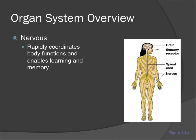The nervous system rapidly coordinates body functions and enables learning and memory. It's often referred to as the granddaddy of all the systems because it includes your brain, spinal cord, and nerves, sending signals throughout the body. If something in the nervous system gets damaged, it affects every other area in the body as well.